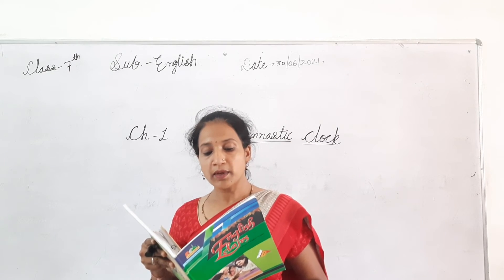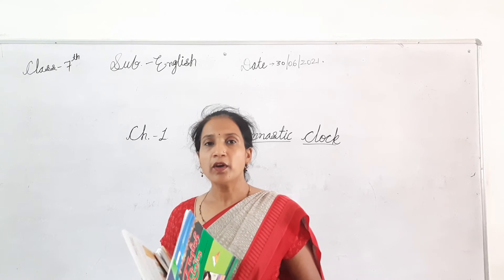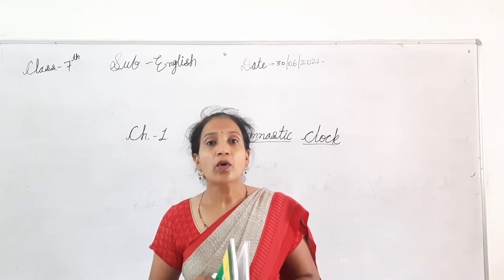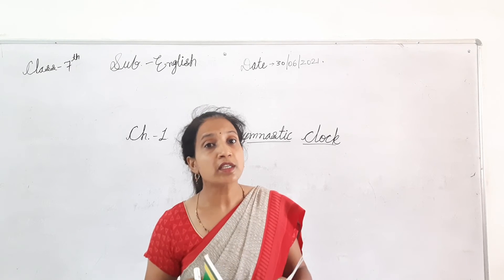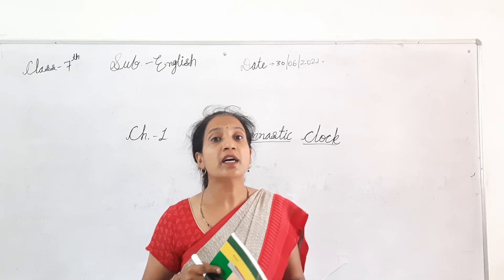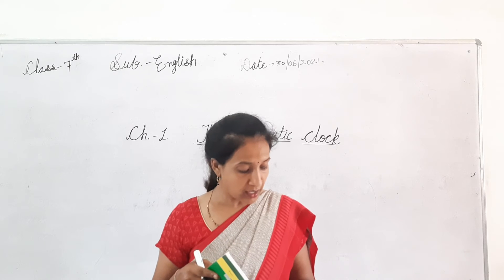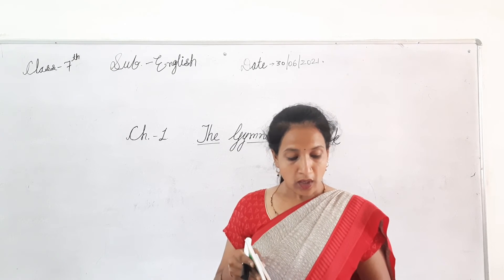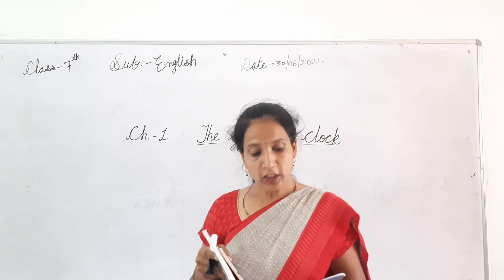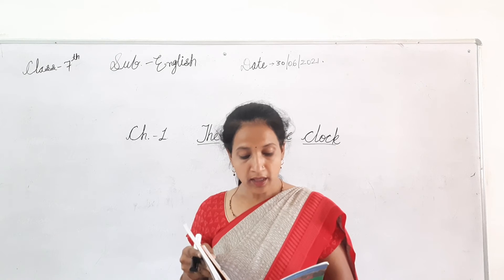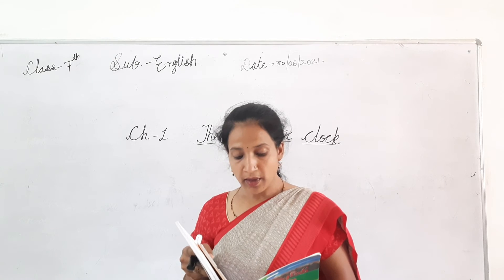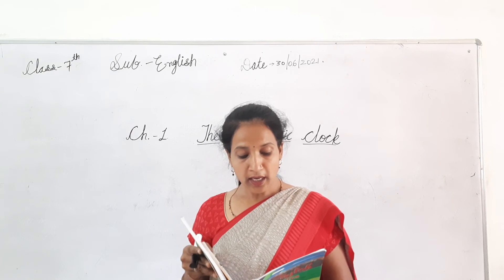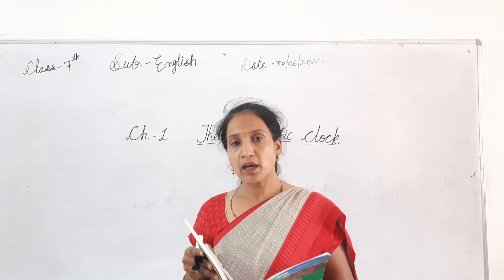Now the third question: which exercise did the clock advise to the poet? The answer to this question will be: the clock advised him to swing his arms round.